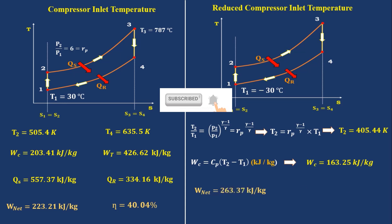Which results in increase in W net. That is 263.37 kJ per kg, whereas here 223.21 kJ per kg.